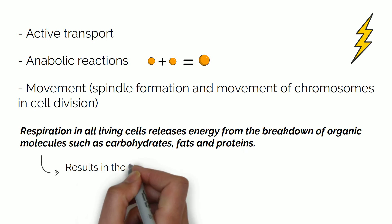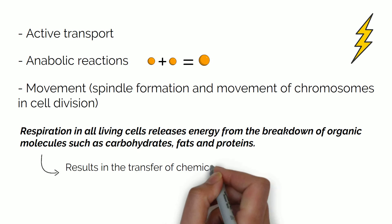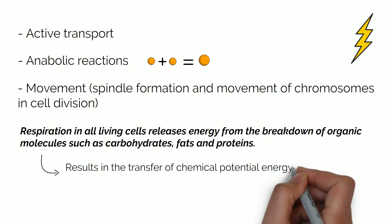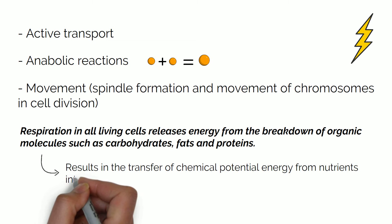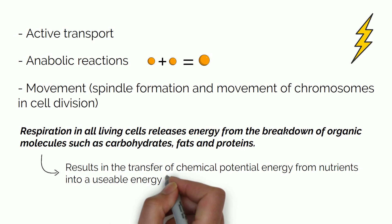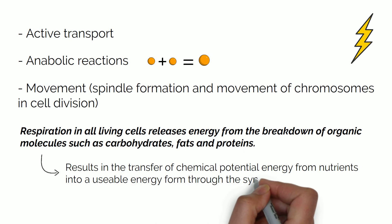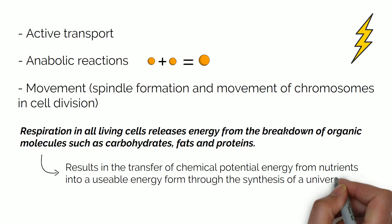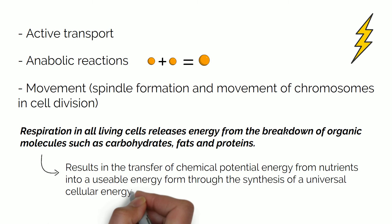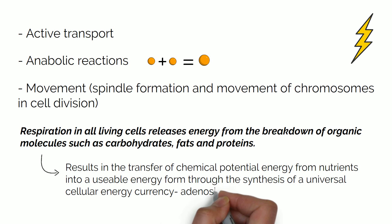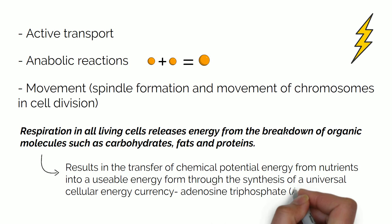This results in the transfer of chemical potential energy from nutrients into a usable energy form through the synthesis of the universal cellular energy currency, adenosine triphosphate, also known as ATP.